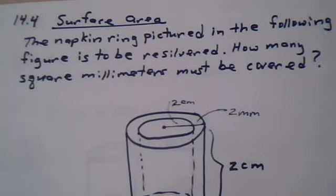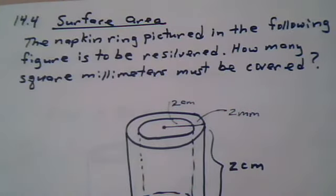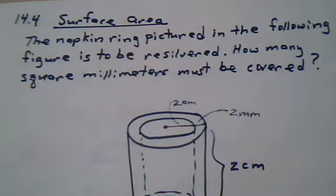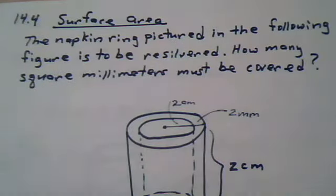The napkin ring pictured in the following figure is to be resilvered. How many square millimeters must be covered? So our answer, they're expected to be in millimeters, so change the centimeters to millimeters first.